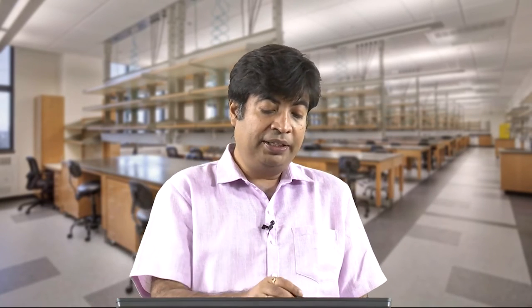We show V0 by V1 and V2 — the case of unbalanced voltage in percentage on a residential feeder, plotted over 24 hours. There are two peaks in India: generally 8 to 10 AM and 6 to 9 PM. When peak demand is higher, unbalance also increases. This shows how unbalanced load in the distribution system changes over time.